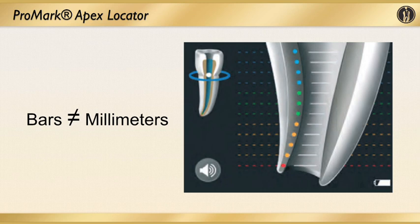As with all electronic devices, the bars shown on this apex locator do not represent millimeters. Some people will look at that and say, I'm one bar away, that means I'm one millimeter away. You can't do that. The bars have no reference whatsoever to millimeters. You have to take it for where the bars are to determine where you want to be at a particular bar — not that three bars back means you're a millimeter back. It has nothing to do with that. It's an empirical position within that canal.